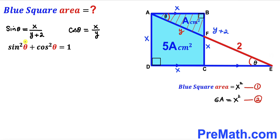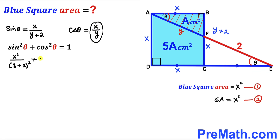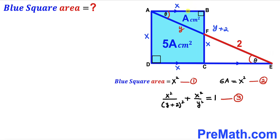Now we apply the Pythagorean trigonometric identity: sin²θ + cos²θ = 1. Substituting our expressions: x²/(y + 2)² + x²/y² = 1. This is equation 3.